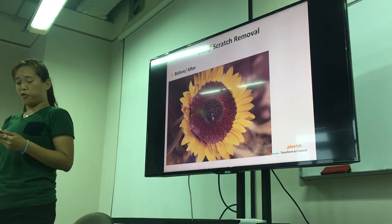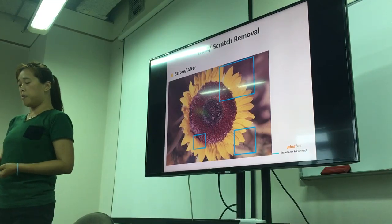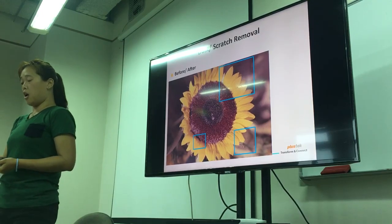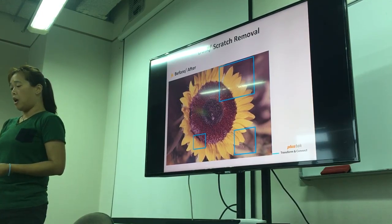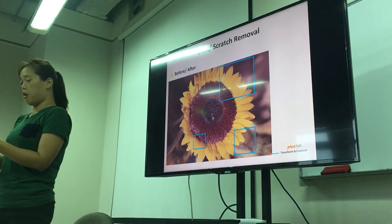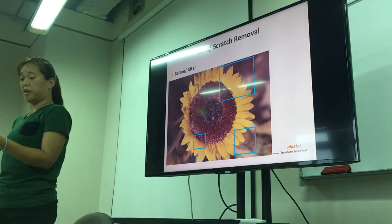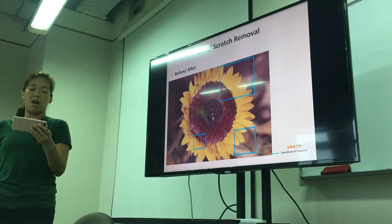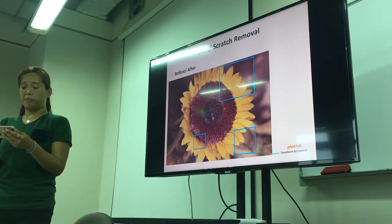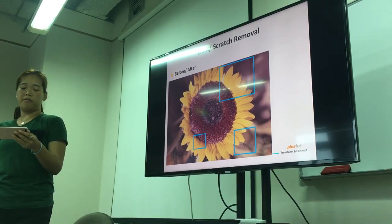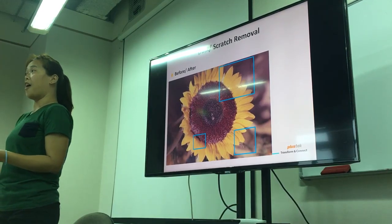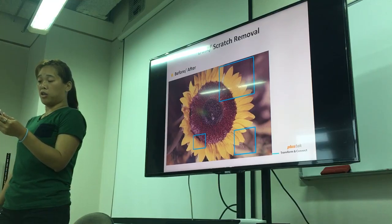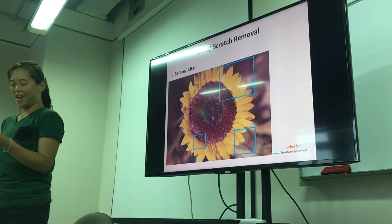Dust scratch removal. As a human being, we know the dust and scratches that we do not want to have in the digital image. But it is on the original file. It is a time-consuming process to remove the unwanted parts manually. This IP feature is developed for our own film scanner with a built-in IR channel. Using this feature could combine the IR direction image and create a clean result.